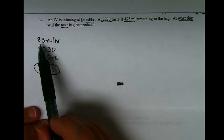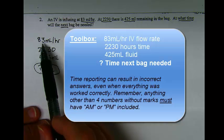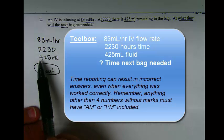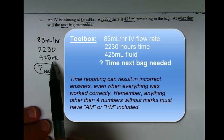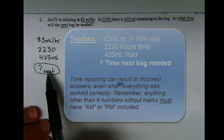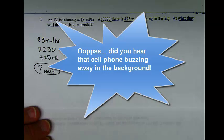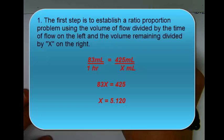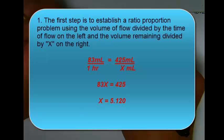In the toolbox I have the flow rate of 83 milliliters an hour, the time that was gathered, the information of 425 milliliters remaining in the bag, and the question of what time will the next bag be needed. The first step would be combining the flow rate of 83 milliliters in one hour to figure out how long it would take 425 milliliters to infuse at that rate.